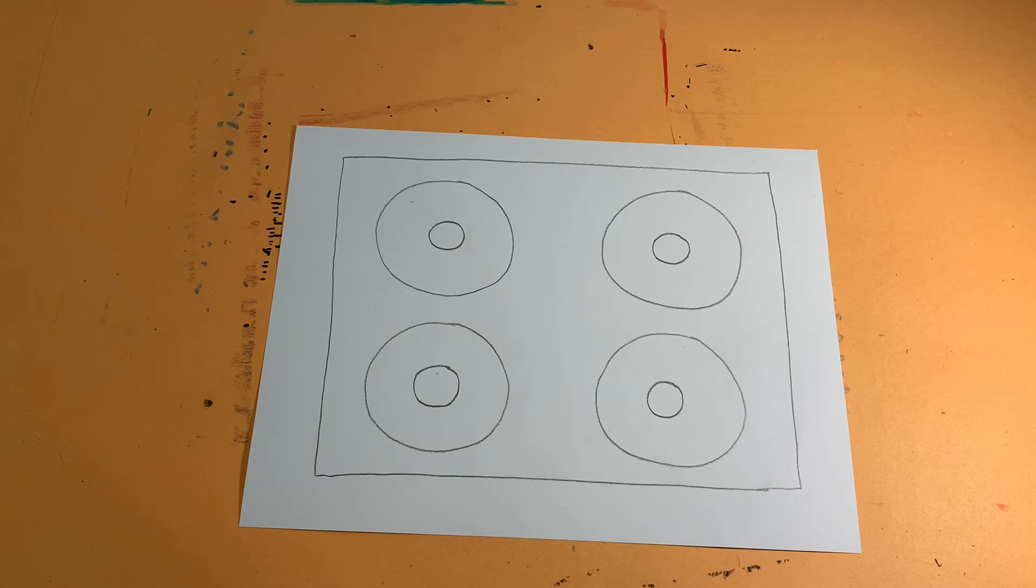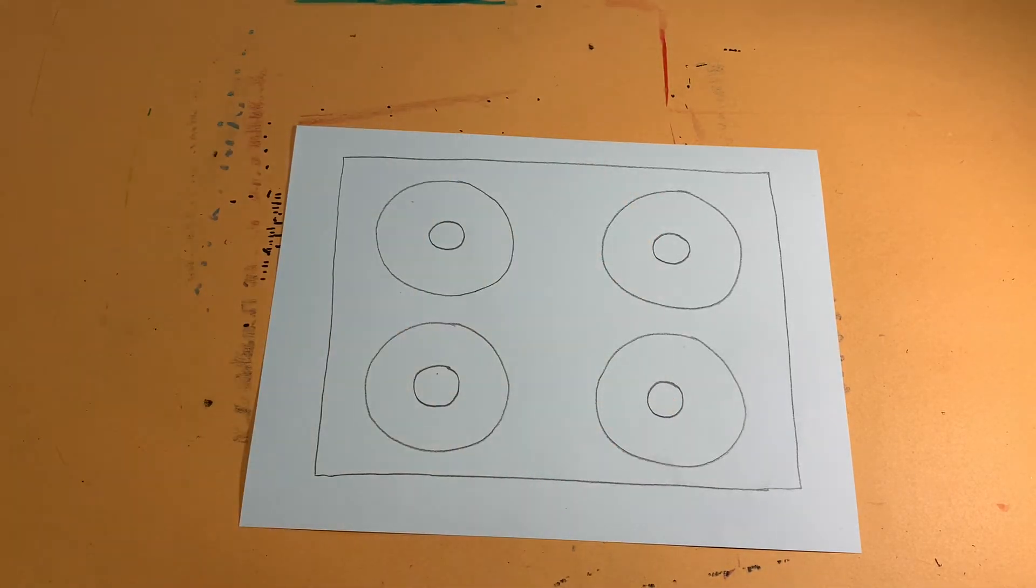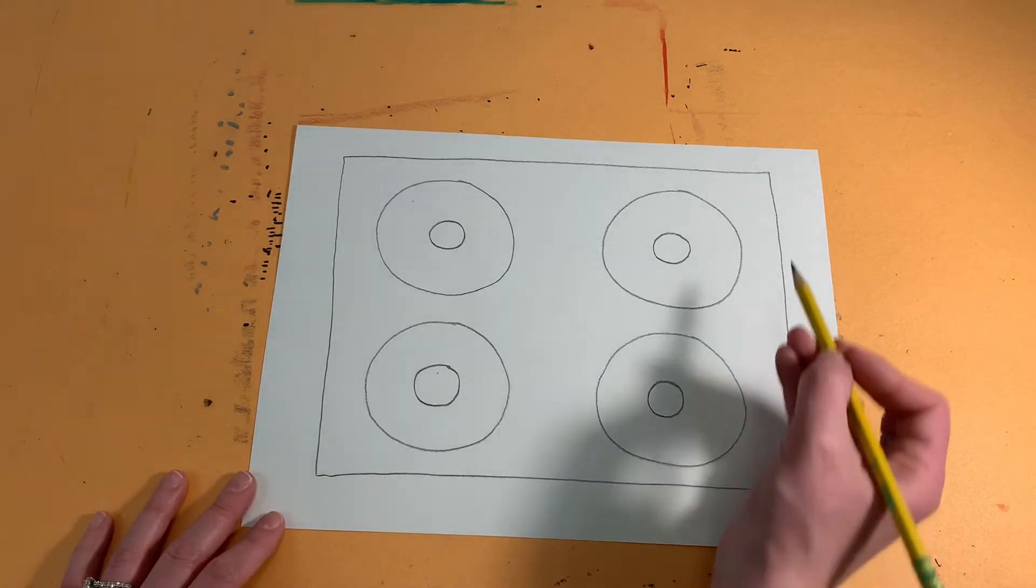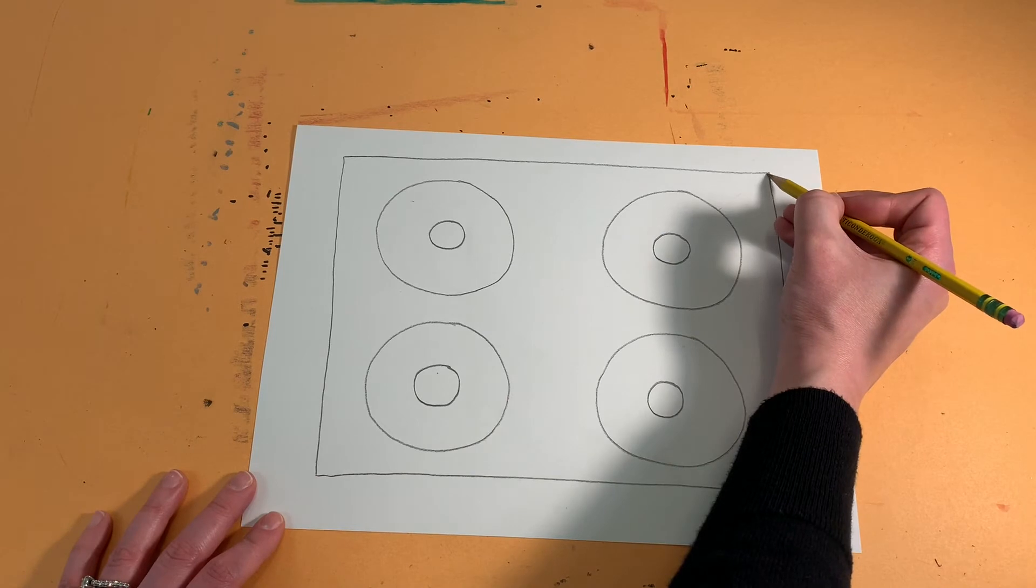We're going to try to make this look a little bit more 3D by adding some lines to show the sides of the box and the bottom. So here's how we're going to do that. We are going to create a diagonal line that comes down and connects to each of the doughnuts from each corner.